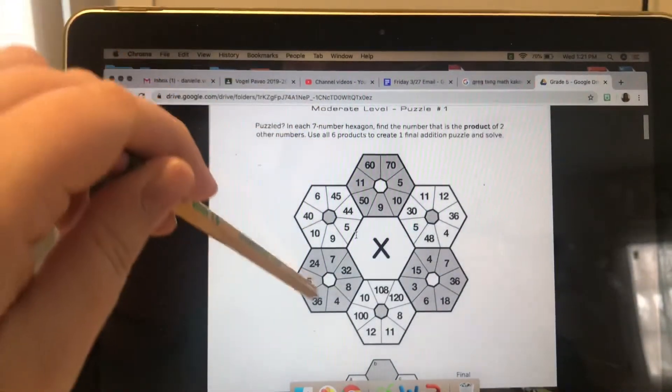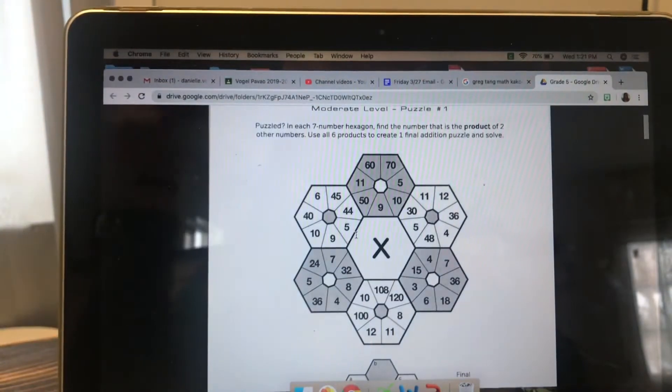In each seven-number hexagon, find the number that is the product of two other numbers. And we know if it's talking about the product, that means it's a multiplication problem.